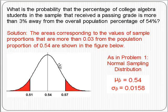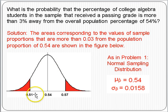Here's a second question based on the sampling distribution. What's the probability that the percentage of college students in the sample that receive a passing grade is more than 3% from the overall population proportion of 0.54, or 54%? In other words, if we collect a sample of 1,000 students, what's the chance that we have 51% or less, or 57% or more — values that are 0.03 away from the mean of 0.54?